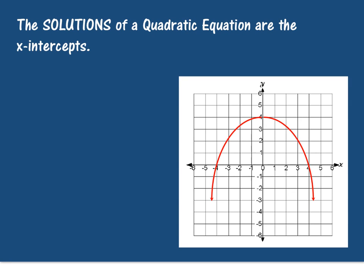The solutions of a quadratic function are your x-intercepts, in this case, at negative 4 and 4.